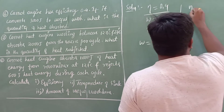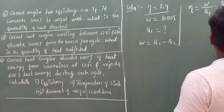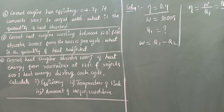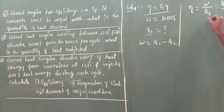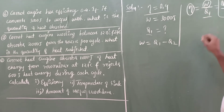The expression for efficiency is: eta equals W divided by Q1, or equivalently Q1 minus Q2 divided by Q1, or T1 minus T2 over T1. Since we know both W and eta, the most useful formula here is eta equals W divided by Q1, which allows us to solve for Q1 directly.